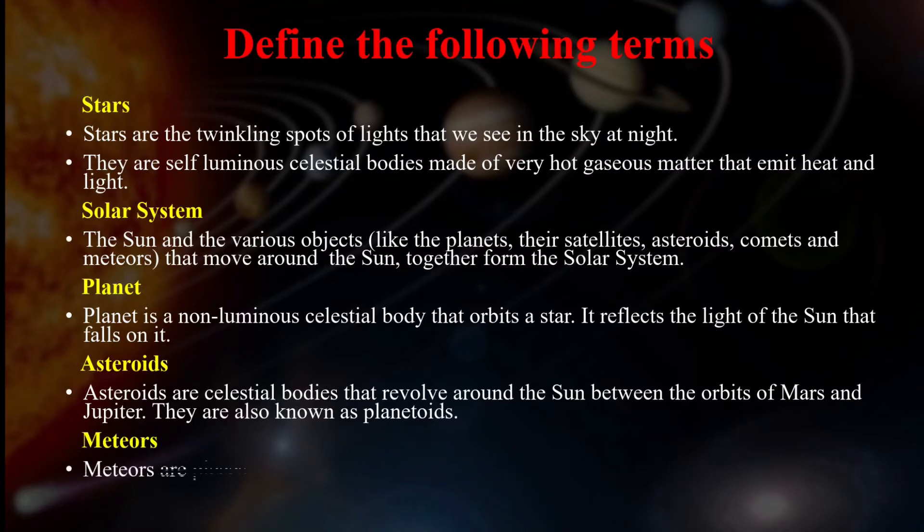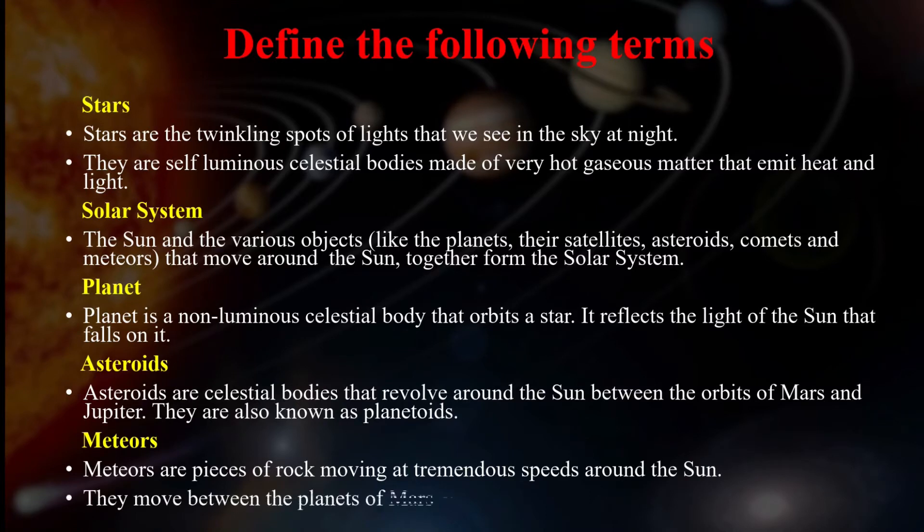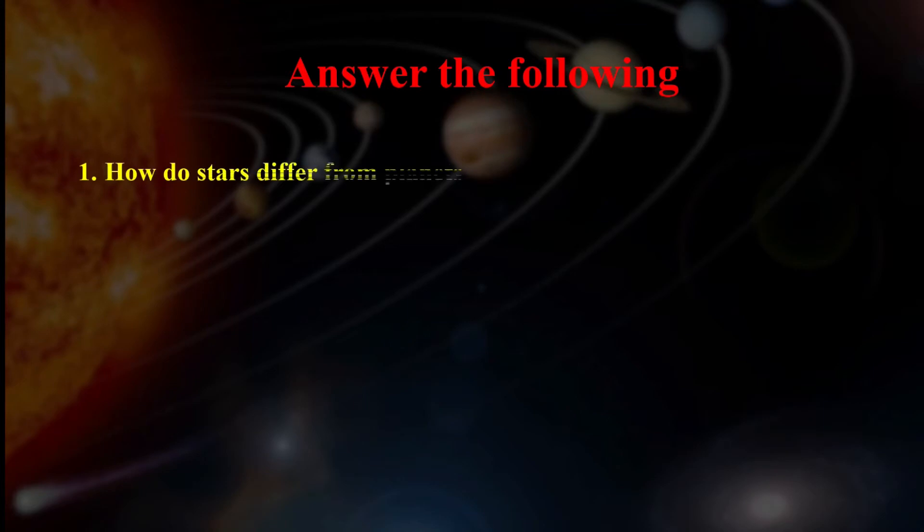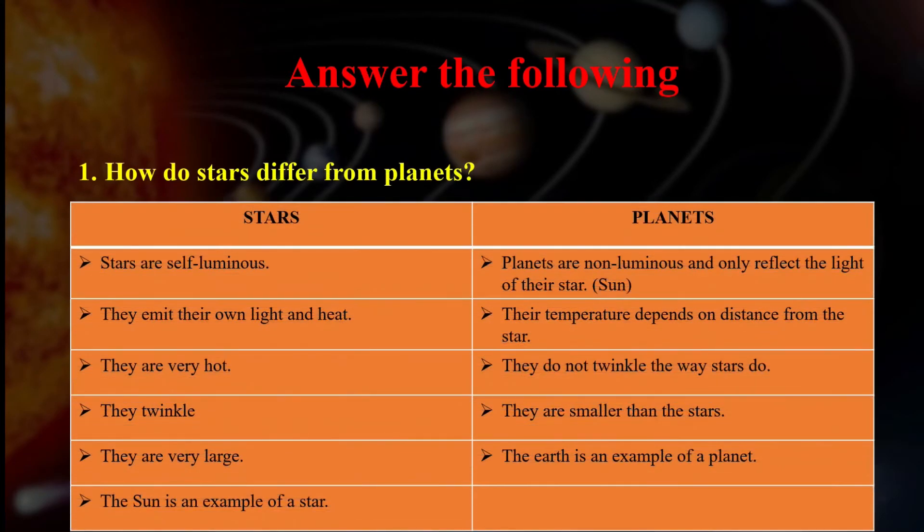Meteors. Meteors are solid rock masses moving at tremendous speeds around the sun. Now, let's answer a few questions. First one is, why do stars differ from planets? So let's differentiate stars from the planets.